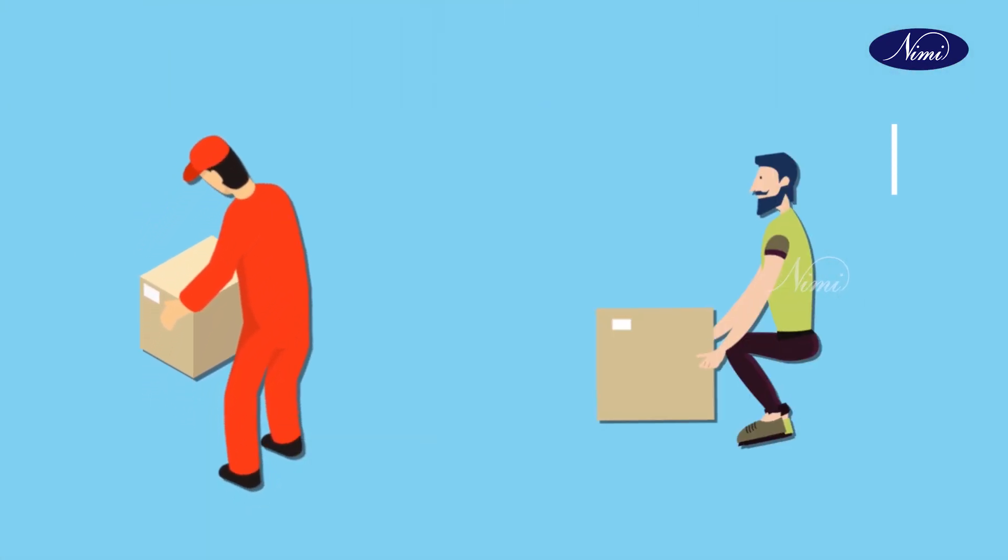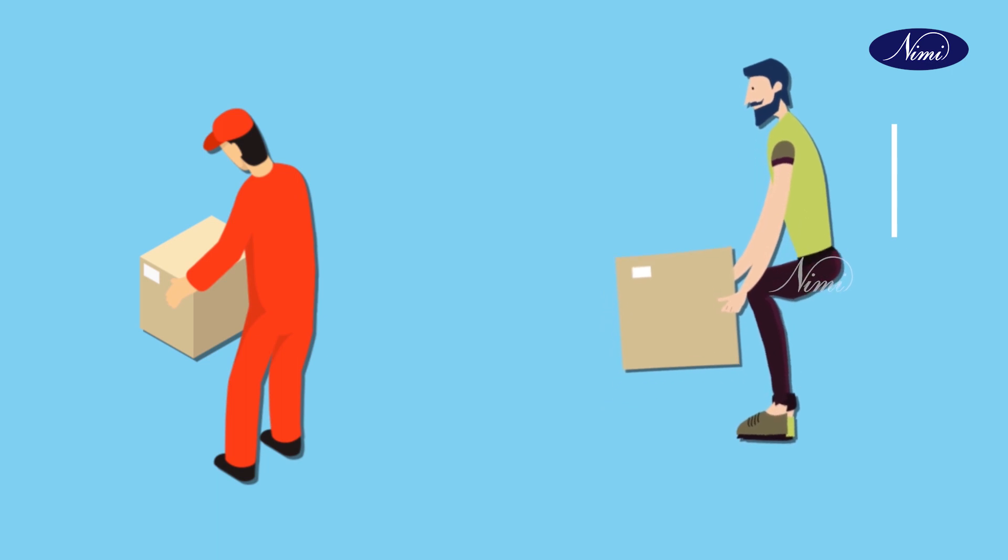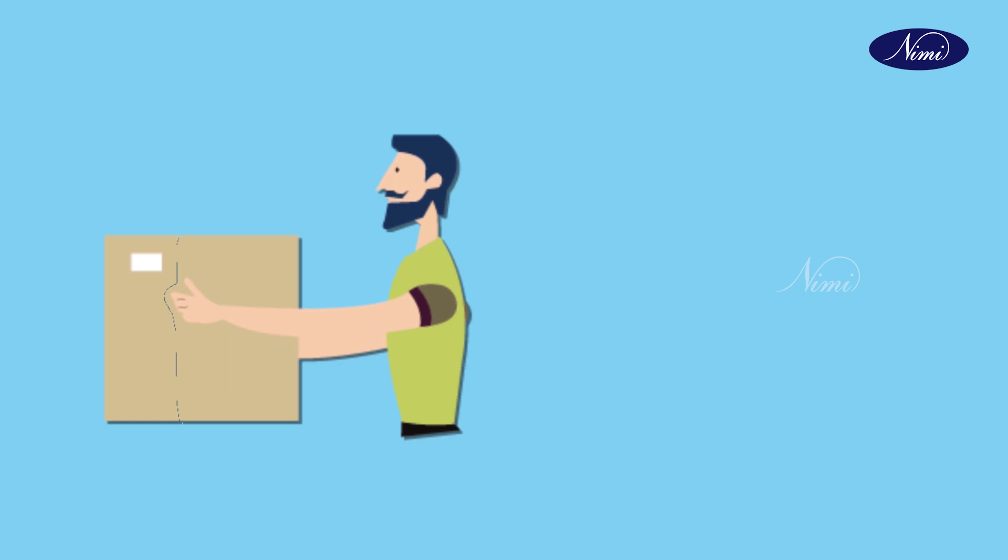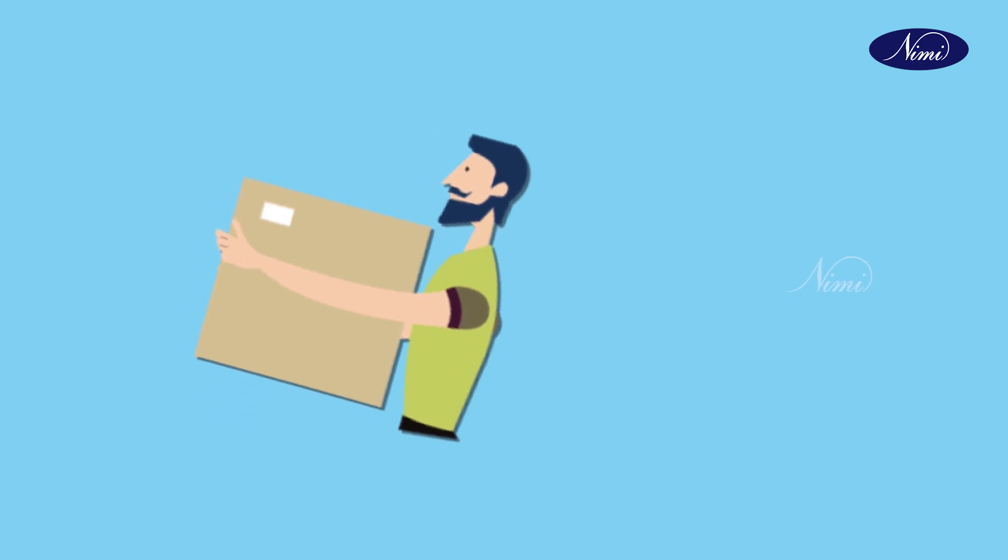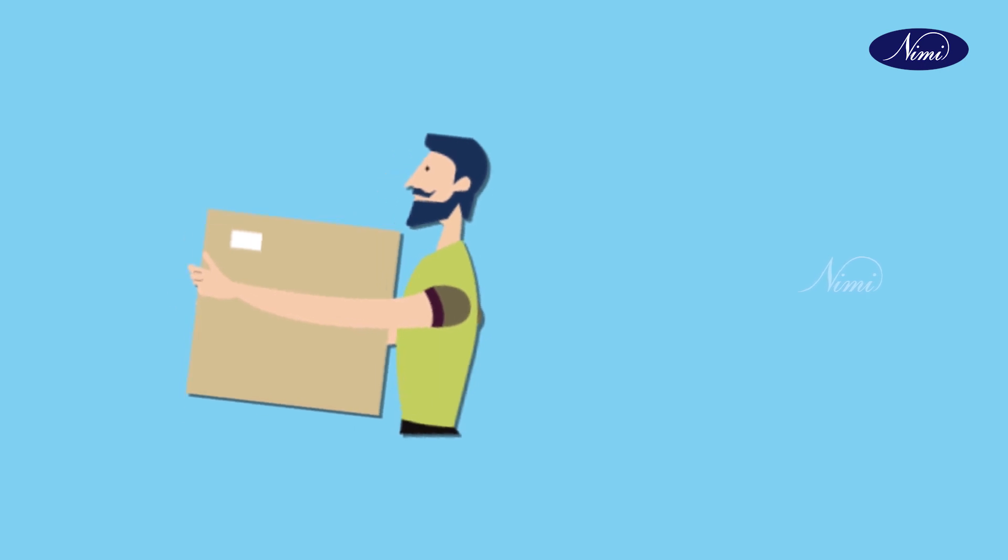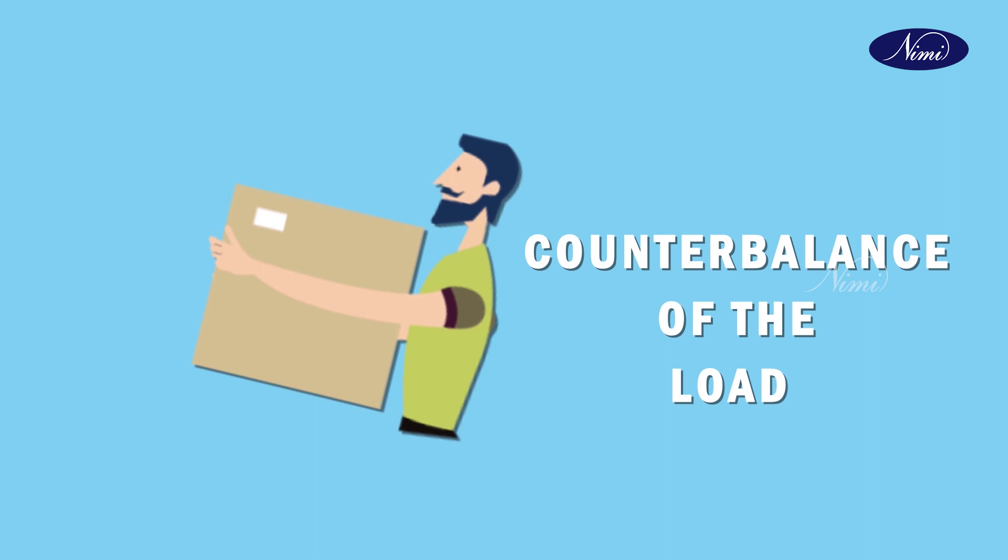To complete the lift, raise the upper part of the body to the vertical position. When a load is near to an individual's maximum lifting capacity, it will be necessary to lean back on the hip slightly before straightening up. It could make a counterbalance of the load.